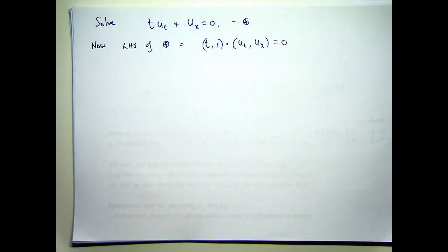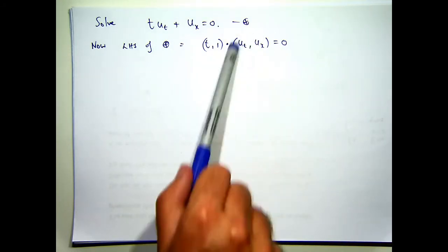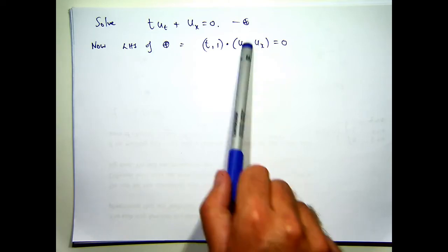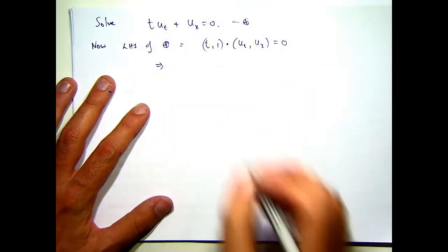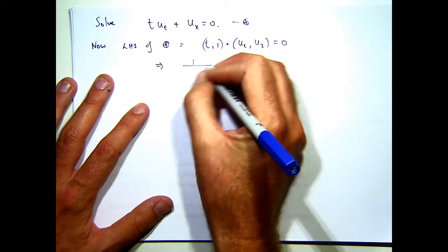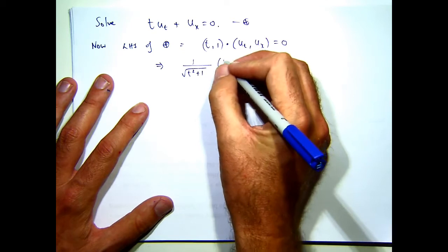Now, if you look carefully, this vector here is the gradient of U. So this implies that, for example, if I form this, make this a unit vector, then I have the following.